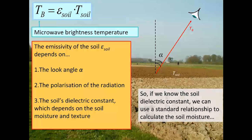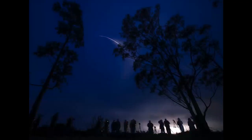Emissivity is the capability of the soil or any material on the ground to emit energy as thermal radiation. A black object is a perfect emitter, and emissivity stems from there. When we know the soil dielectric constant, we can use a standard relationship to calculate soil moisture. SMAP has a very specific incident angle — we take the look angle, the polarization of the radiation, and the dielectric constant to give us brightness temperature, which is what we use to calculate soil moisture for all SMAP products.